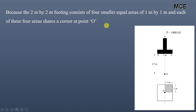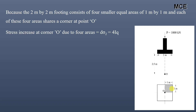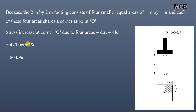Because our footing consists of four smaller equal areas of 1 m × 1 m and each of these four areas shares a corner at point O, the stress increase at corner O due to these four areas is equal to 4 × I × q. Substituting values: 4 × 0.060 × 250 = 60 kilopascal. So this is the stress increase at a depth of 2.5 meters due to the load acting on the footing.